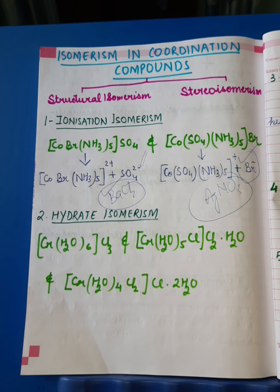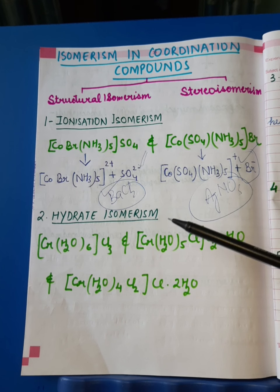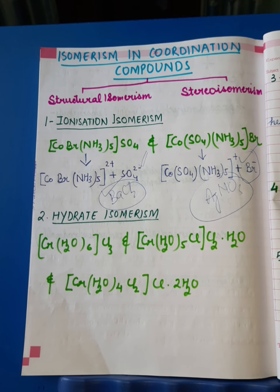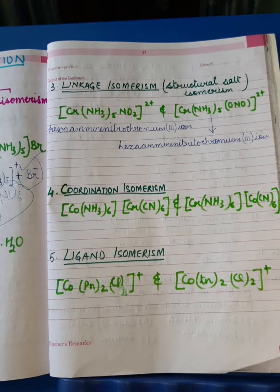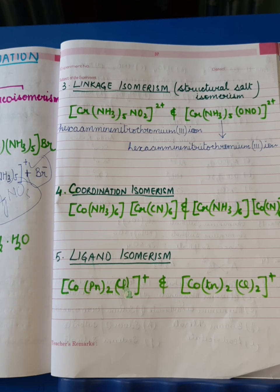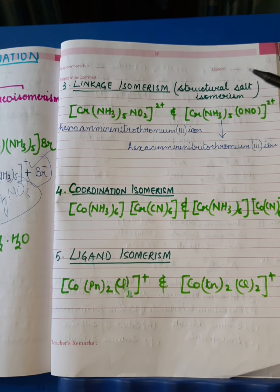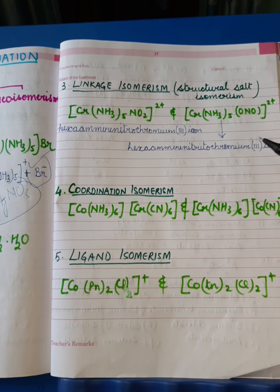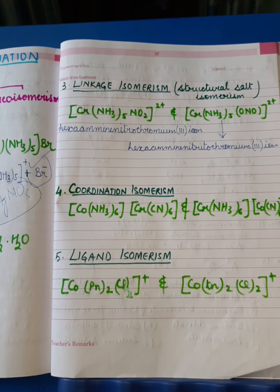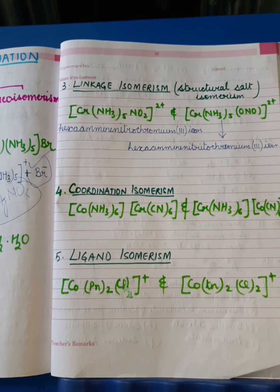This difference in water molecule behavior becomes the criterion for hydrate isomerism. Now moving on to the third isomerism — linkage isomerism, which is also known as structural salt isomerism. This isomerism is due to the presence of ambidentate ligands in coordination compounds.